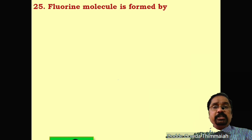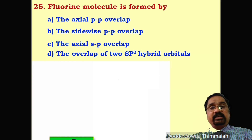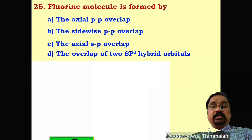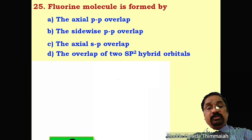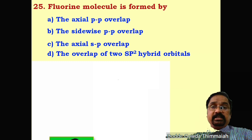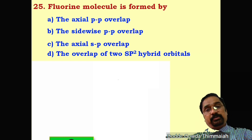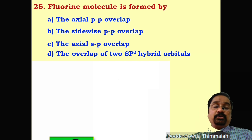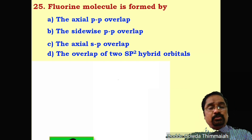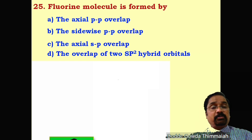Question 25: Fluorine molecule is formed by what type of overlapping? The options are axial P-P overlapping, sideway P-P overlapping, axial S-P overlapping, and overlap of two sp² hybrid orbitals. The correct answer is axial (head-on) P-P overlapping, which gives the sigma bond in F₂.